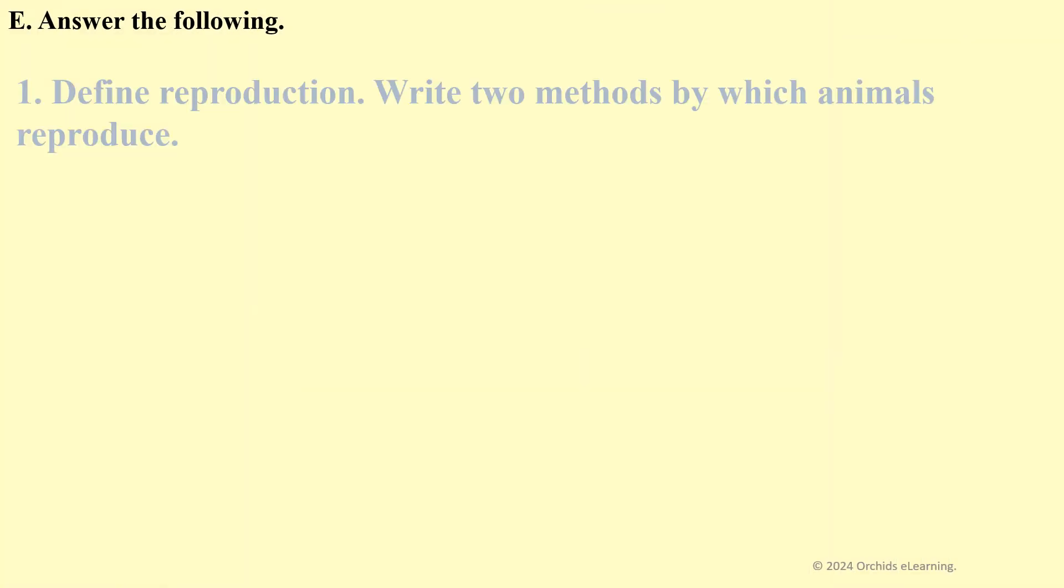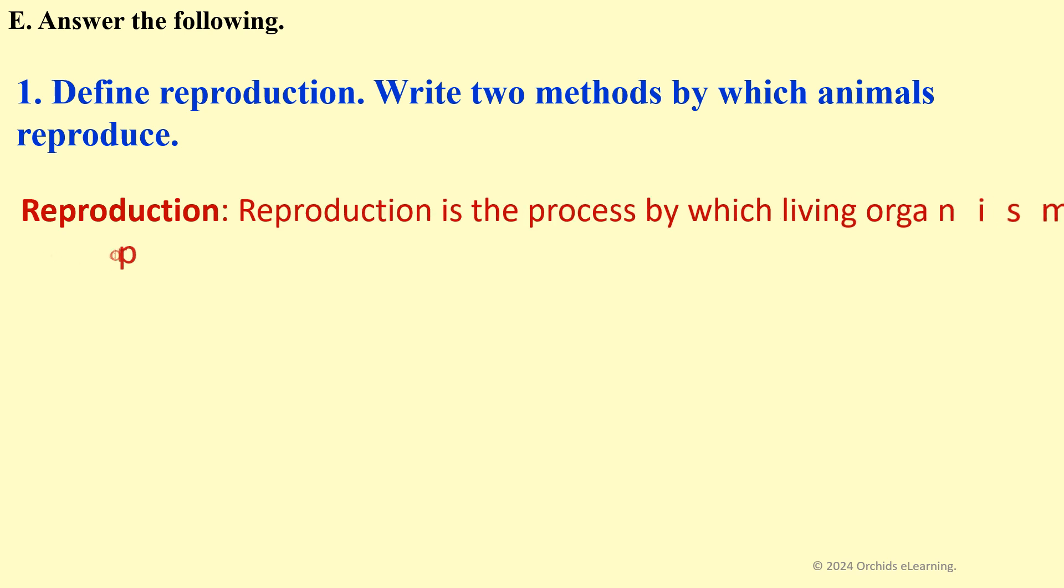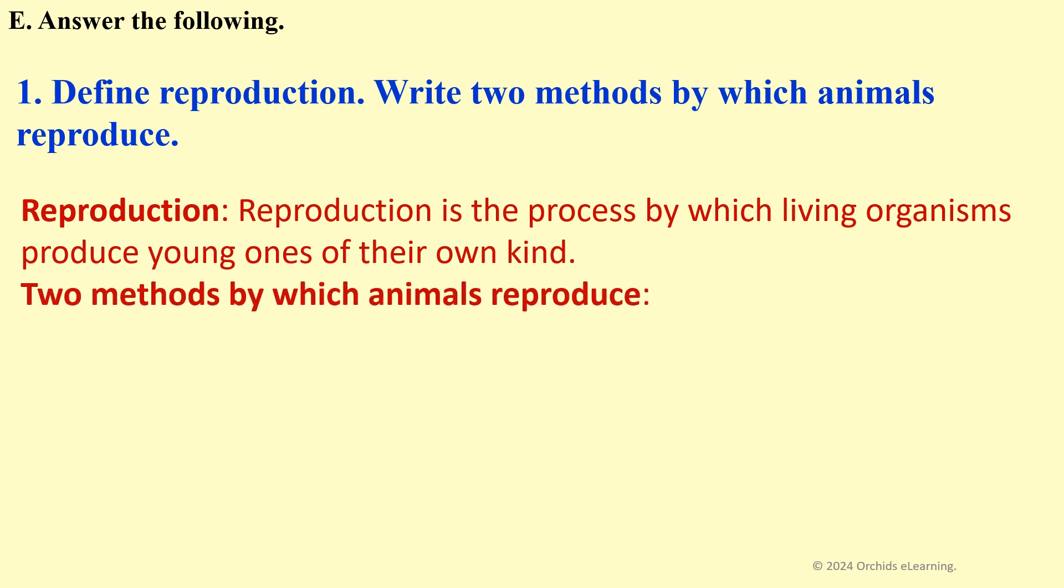Answer the following. Define reproduction. Write two methods by which animals reproduce. Reproduction is the process by which living organisms produce young ones of their own kind. Two methods by which animals reproduce: